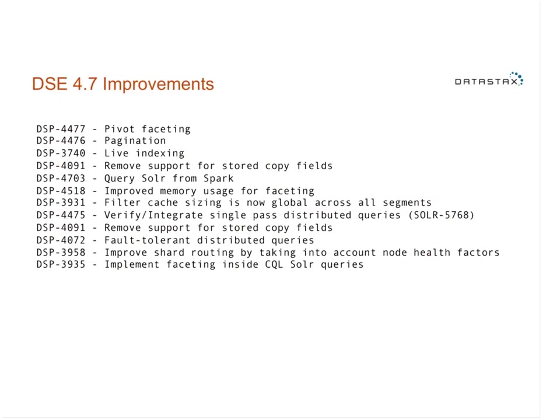DSE 4.7 improvements are substantial — the main one being live indexing. There are many improvements in throughput and running search at scale. What differentiates DSE from the competition is really large clusters — it's common to have a thousand-plus nodes in a Cassandra cluster, whereas other search offerings can top out at tens of nodes.